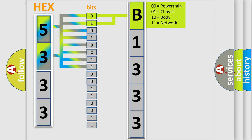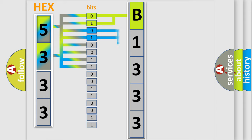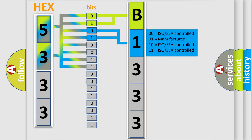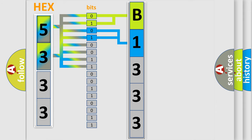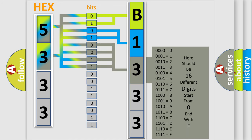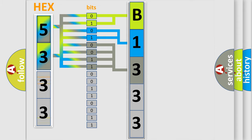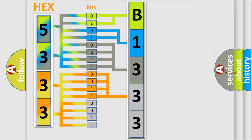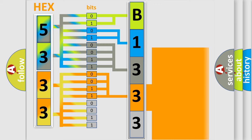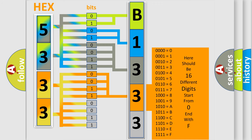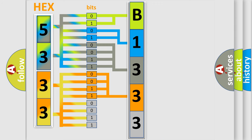By combining the first two bits, the basic character of the error code is expressed. The next two bits determine the second character. The last bits of the first byte define the third character of the code. The second byte is composed of a combination of eight bits. The first four bits determine the fourth character of the code, and the combination of the last four bits defines the fifth character.